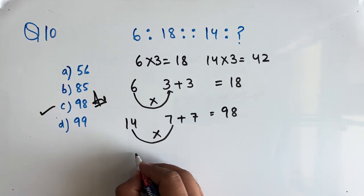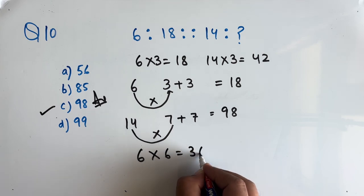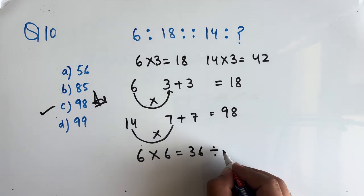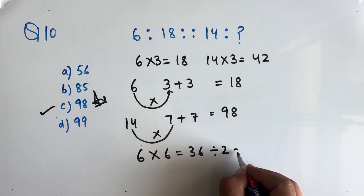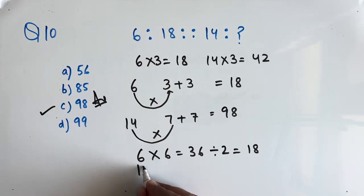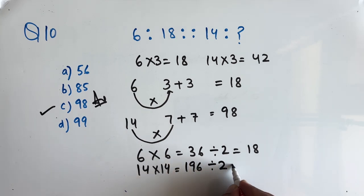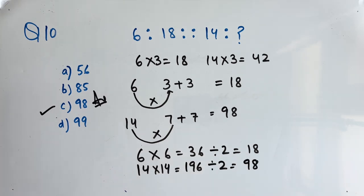Another way: if we multiply 6 by 6 we get 36, and if we divide by 2 we get 18. In the similar way, 14 into 14 is 196, and if we divide by 2 we get 98. I hope you find this video useful.